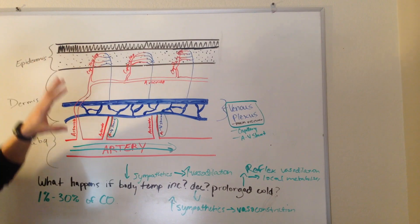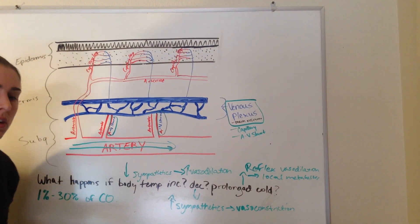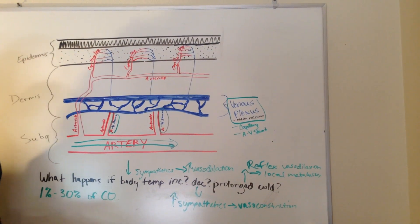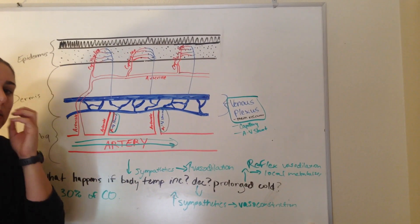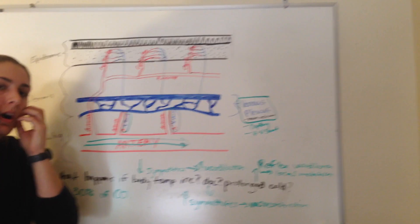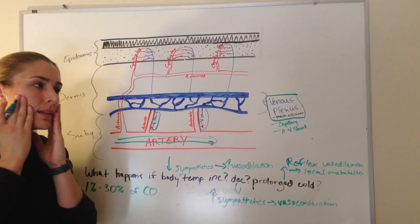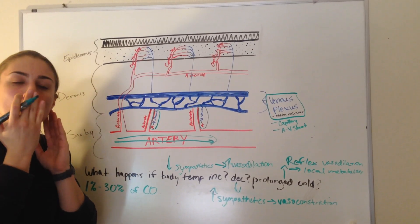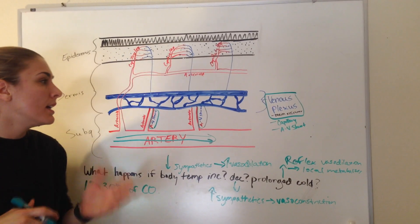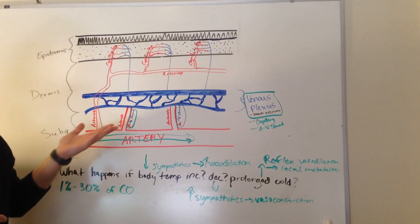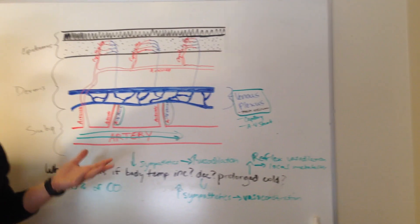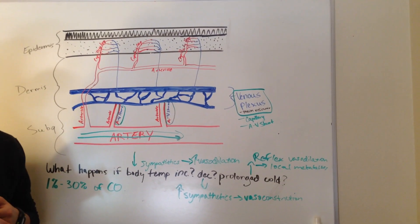This is what we see when you see kids out for a long time during the day when it's really cold. They've been out for a while and they have really pink cheeks and a bright red nose. This is the reflex vasodilation that you see in prolonged cold.